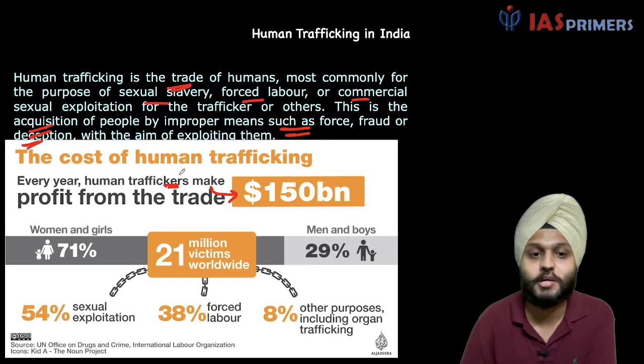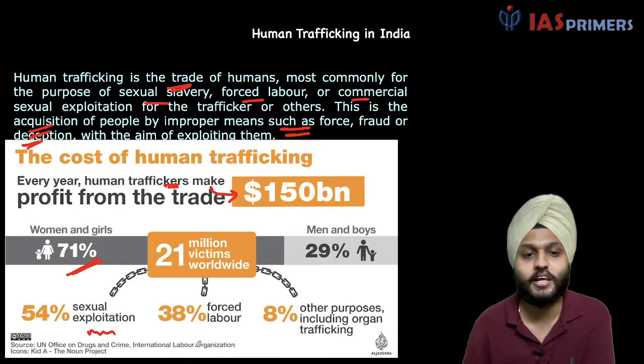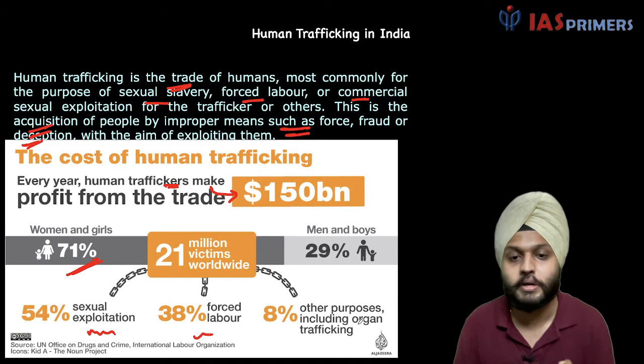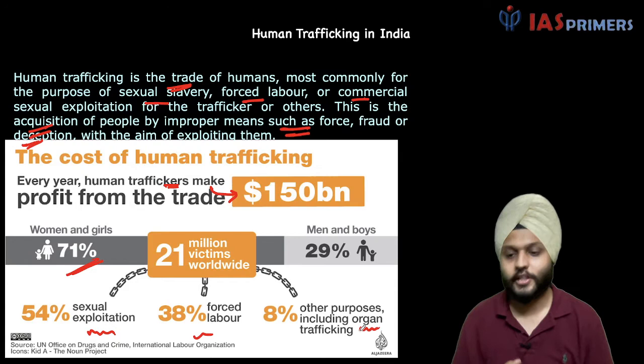If we talk about the victims, there are 21 million victims, the majority of them being women or girls, and most of them engaged in sexual exploitation, then forced labor, and then it could be any other offense — maybe handling of drugs, illegal diamond trade, or it could be organ trafficking. So any activity linked to the trade of human beings constitutes human trafficking.